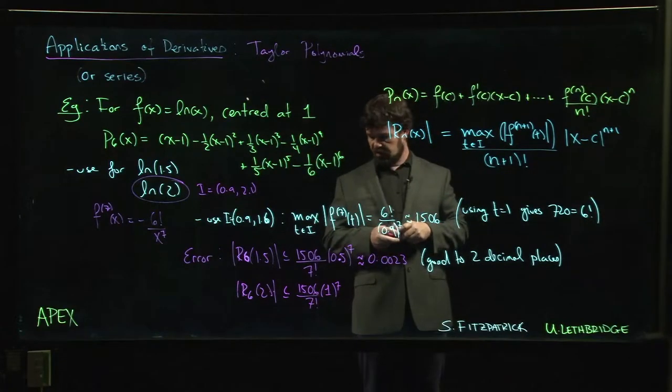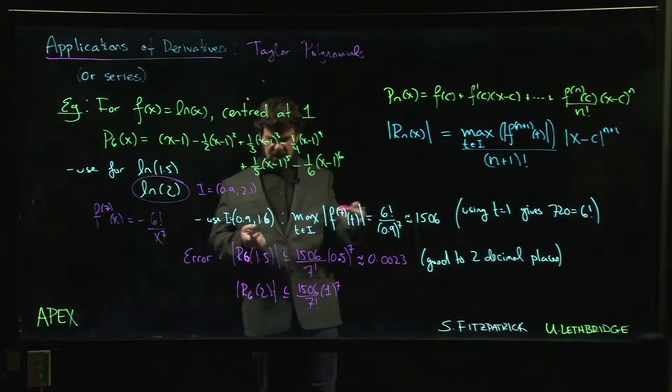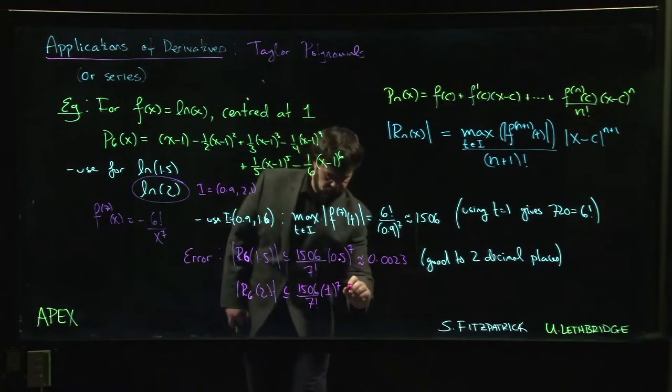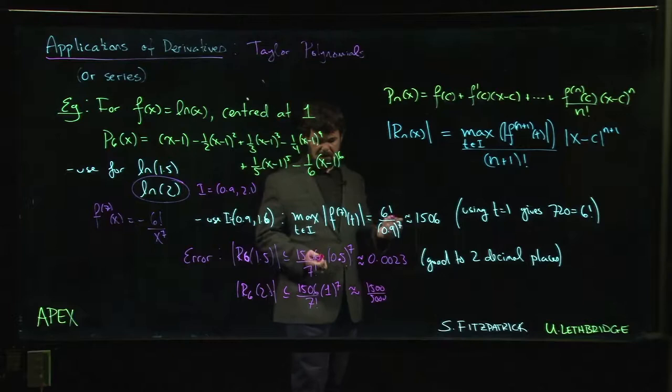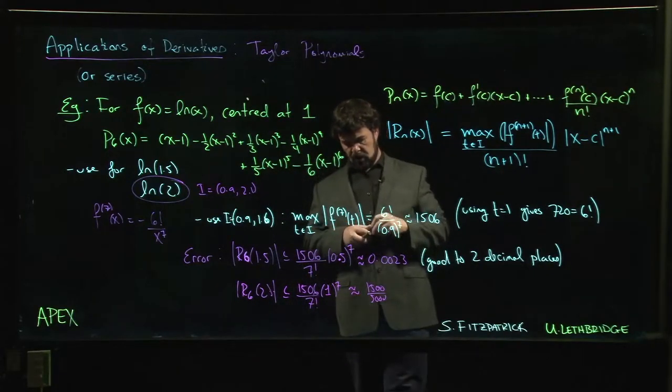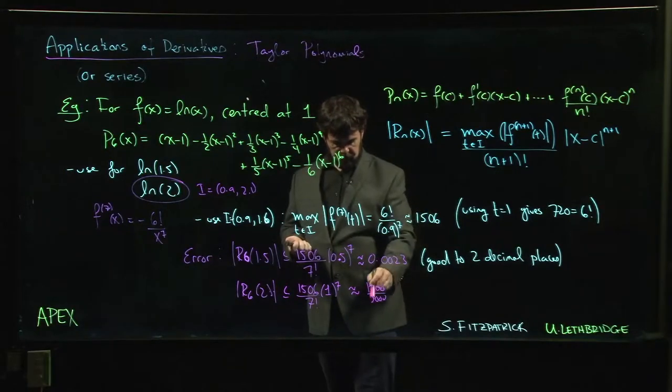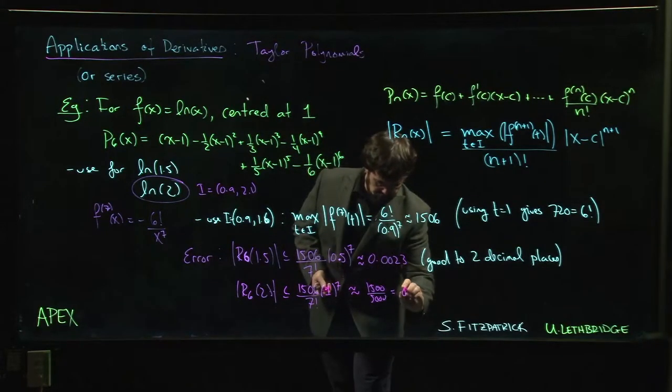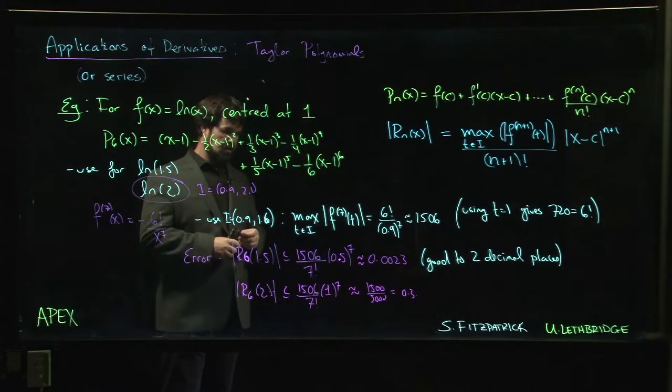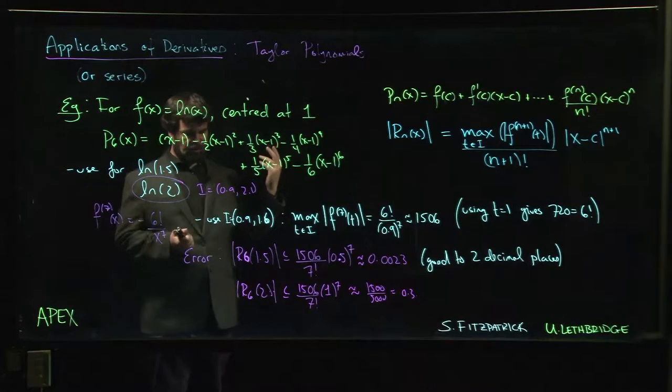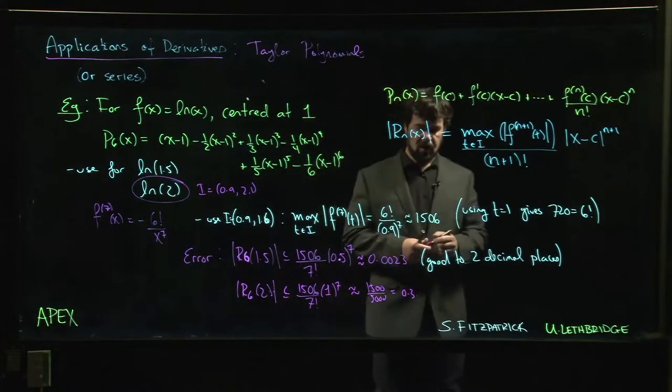And you can see that this is not going to be very good at all. So 7 factorial is, what, like 7 times 720 is around 5,000. So this is around 1,500 over 5,000, something like that. So it's less than one, but it's bigger than 0.1. So it's not as good. It's certainly not as good anymore. I guess it's 3,000 over 10,000, so somewhere around 0.3, which tells you that your answer—you don't necessarily even have the first decimal place. You've got the ones digit, okay, but that's about it. So here's where you can see that this is not going to help.